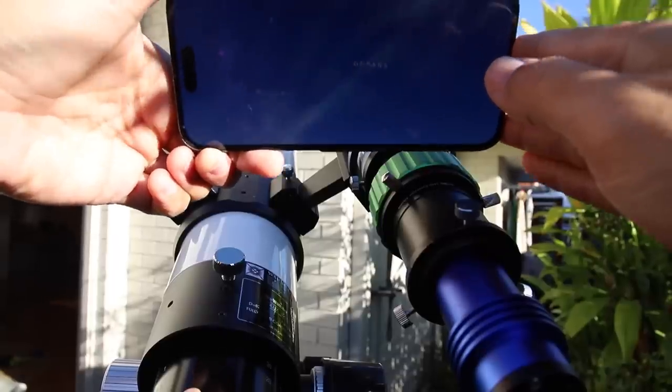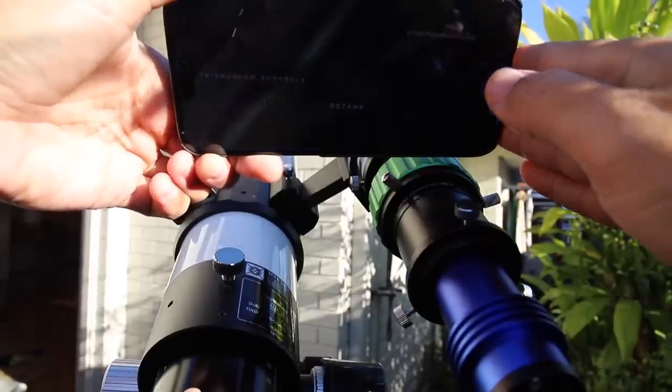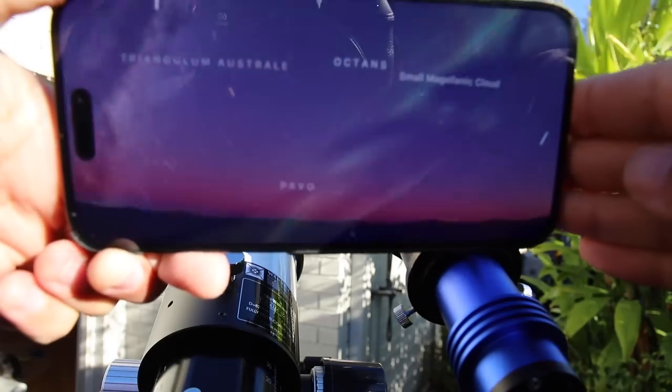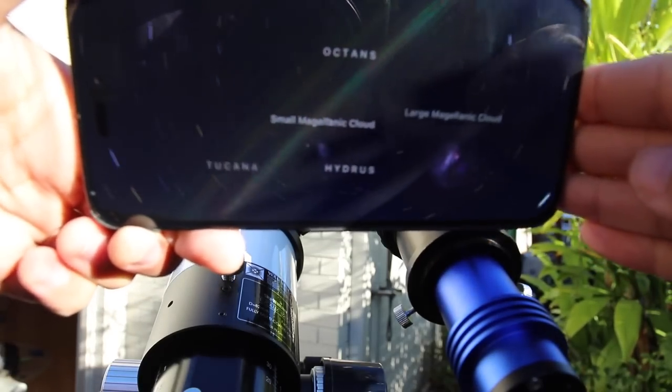Now for rough polar alignment, I'm just going to use Sky Guide set to fast forwards so I can see where the south celestial pole is. I'm pretty well on it, but I'll do a three point polar alignment later.